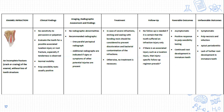Favorable outcomes of enamel infraction management: tooth is normally asymptomatic, positive response to pulp sensibility test, and continuing root development in immature teeth. Unfavorable outcomes: tooth becomes symptomatic, pulp necrosis and infection develop, periapical periodontitis occurs, and lack of further root development — indicating the tooth has suffered more than a normal infraction.